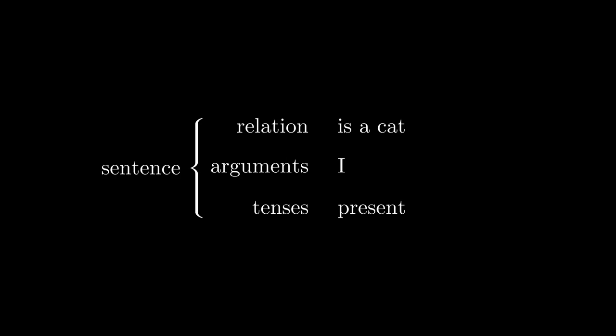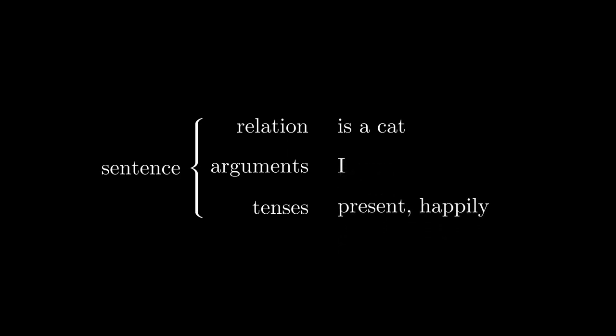An example of a tense would be the time tense — I am a cat, I was a cat, I will be a cat, yesterday I was a cat, and so on. Another example would be emotional tenses: happily I am a cat, or confusedly I am a cat. There's also a system for modifying relations, so I could say 'I am a black cat'; a system for modifying arguments, so 'five of you are cats'; and for skipping arguments, so I could simply say 'cat' without including any trailing arguments. There's also a system for adding arguments, as in 'I am a cat sent by the authorities in order to arrest you for crimes against the internet.'